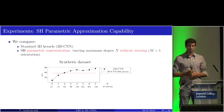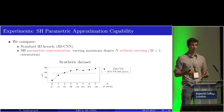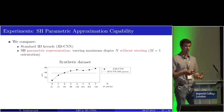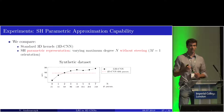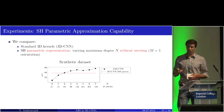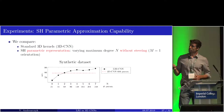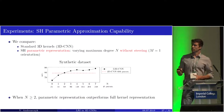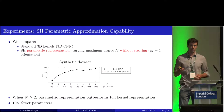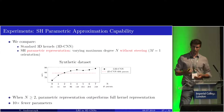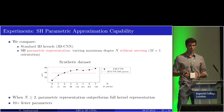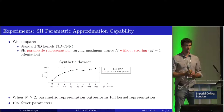Now the results. First, we evaluate the parametric approximation capability of our spherical harmonic filters. We compare a standard 3D CNN with our spherical harmonic parametric representation, varying the maximum degree of angular frequency without using the steering property — keeping a single orientation N=1. We see that when the maximum degree N is greater than or equal to 2, the parametric representation already outperforms the full kernel representation, even with 10 times fewer parameters. This tells us that for simple patterns and few data, fewer but more structured parameters — as provided by the spherical harmonic representation — are beneficial.